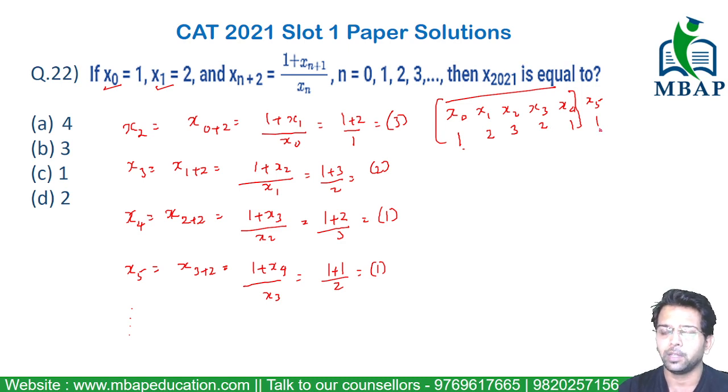x₅ will again be 1. If x₅ is 1, the question becomes simple. The question is: if x₅ equals 1, what is x₂₀₂₁?